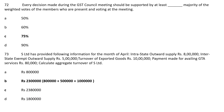Question 72: Every decision made during the GST Council meeting should be supported by at least dash majority of the votes of members who are present and voting at the meeting. Option A: 50%; Option B: 60%; Option C: 75%; Option D: 90%. The correct answer is Option C, 75%. Every decision must be supported by at least 75% majority of the weighted votes.